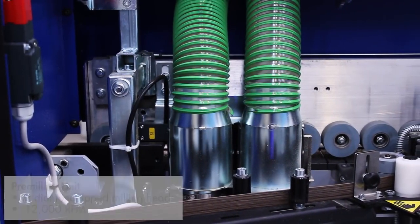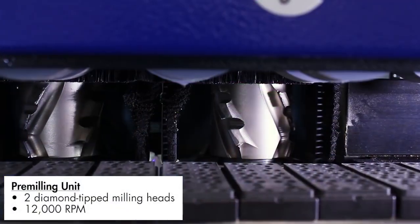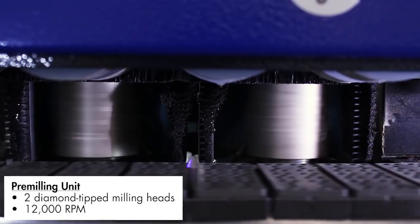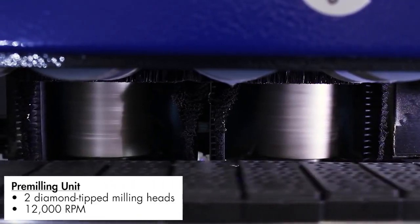The G360 features a pre-milling unit with two diamond-tipped milling heads which rotate in opposite directions to ensure a perfectly straight workpiece edge, guaranteeing that chipped or torn edges are a thing of the past.